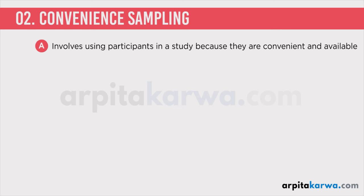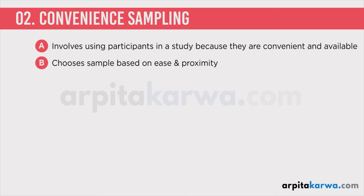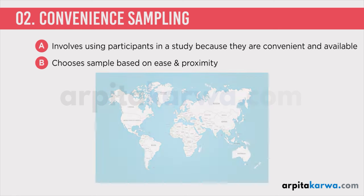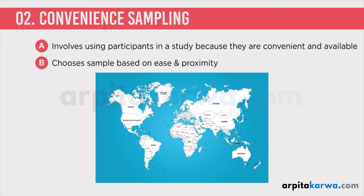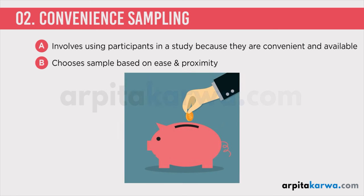In convenience sampling the researcher selects the research sample based on ease and proximity to the researcher — whatever sample is available to them is used. The benefit of using convenience sampling is that it involves less time and cost, and speed is also high. If you want to take a sample from America, Canada, or Australia it will be difficult and time consuming. But if you take a sample from your neighborhood you save a lot on money and time. It is often easier and faster to simply use individuals who are near to us or who volunteer to participate.